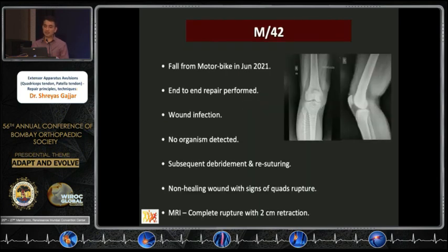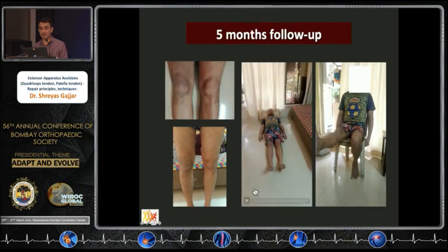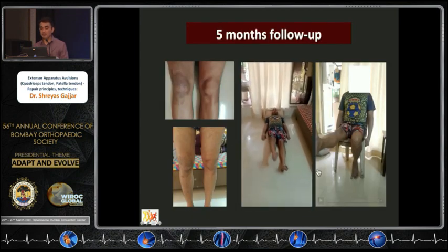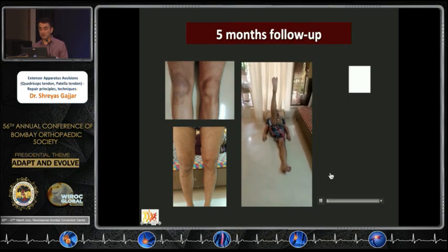This is a 42-year-old patient who had a fall from a motorbike and sustained a quadriceps tendon rupture in June 2021. An end-to-end repair was performed in another center; unfortunately the patient developed wound infection with no organism identified. Subsequently, debridement and re-suturing were attempted twice, but only end-to-end suturing was performed. He presented to me with a non-healing wound and signs of quadriceps rupture; MRI showed a two-centimeter retraction. We performed a trans-osseous patella tunnel technique and at his five-month follow-up he has done well.